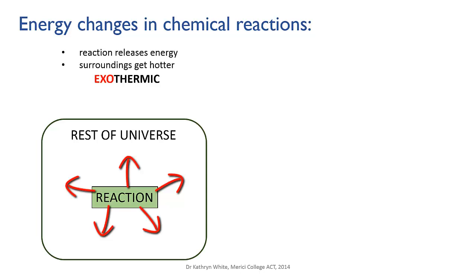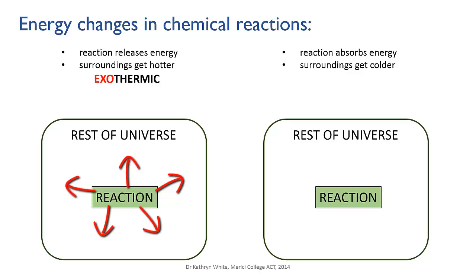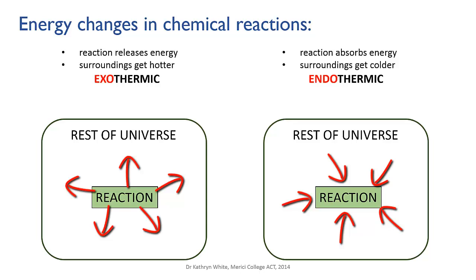If a chemical reaction absorbs energy, where is it going to get the energy from? It has to come from the surroundings — that is, from somewhere in the rest of the universe. Energy flows from the surroundings into the reacting chemicals and is incorporated or stored as chemical energy in the molecules of the products. Because energy is being removed from the surroundings, you observe this as the surroundings cooling down. You may also observe it as the reaction only being able to go if you provide a continual supply of extra heat from outside. Such a reaction is called endothermic — heat to the inside — where the inside is the newly formed molecules.